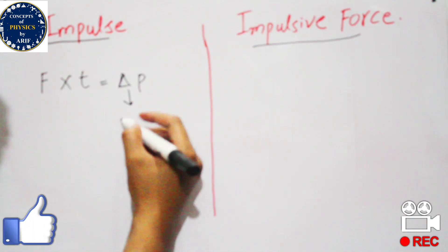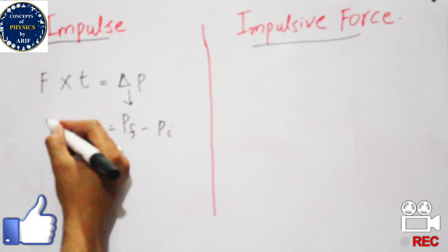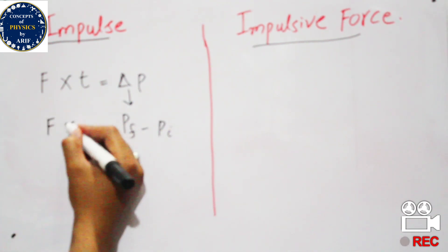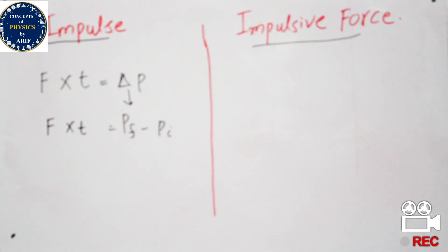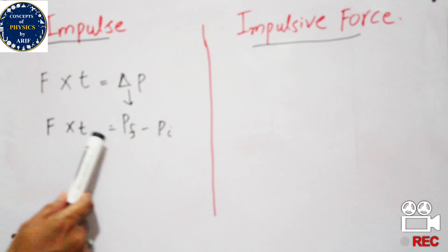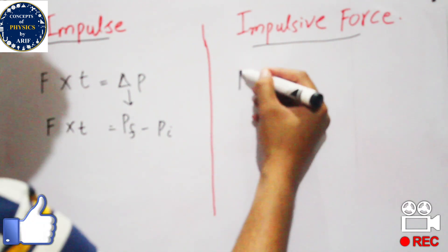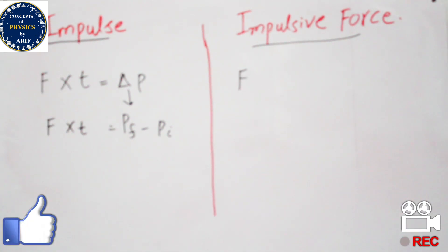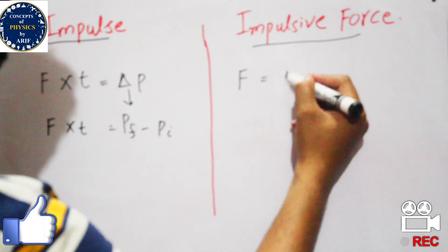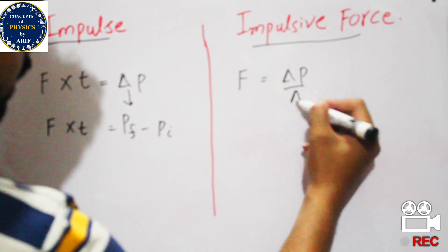Change in momentum can be written as final momentum minus initial momentum, which equals F cross T. This means that the change in momentum is also known as impulse, or force multiplied by time equals change in momentum. The impulsive force is the time rate of change of momentum, also known as linear momentum.